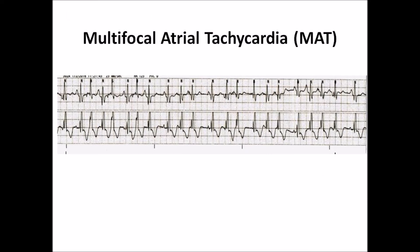Multifocal atrial tachycardia with a block. This is an irregularly irregular rhythm with several different P-wave morphologies and variable PR interval. The QRS is wide and the rate is about 120 to 130 beats per minute.